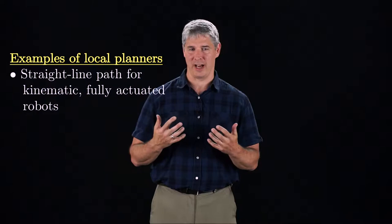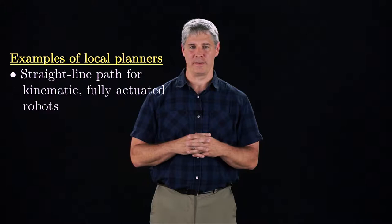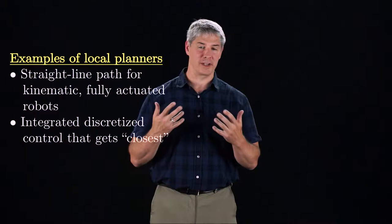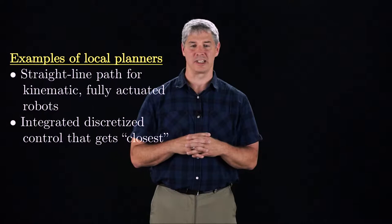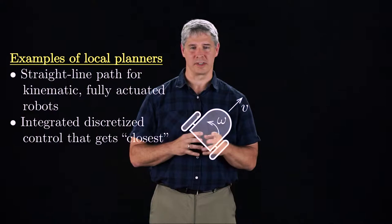The simplest local planner is one that returns a straight-line path for fully actuated kinematic robots with velocities as the inputs. For robots with more general dynamics, x dot equals f of x u, we can discretize the set of controls, integrate each one forward a fixed amount of time, and choose the new state x_new as the one that comes closest to the sampled state.